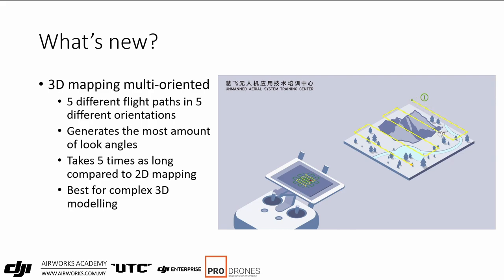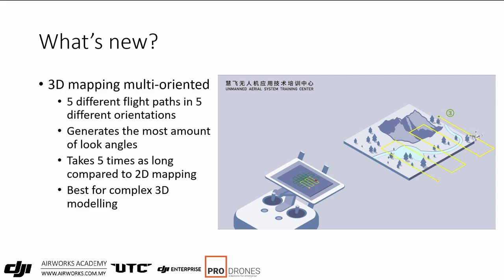3D mapping multi-oriented is a newer mode, first available on this model. It flies one nadir operation and four oblique operations facing the different facades of the object. For a building, it first takes a nadir mission with the camera 90 degrees down, then captures the north, south, east, and west facing sides. Note that in those four flight paths the drone doesn't change its orientation. This gives the most look angles and detail for high-resolution 3D object processing, but takes the most time.